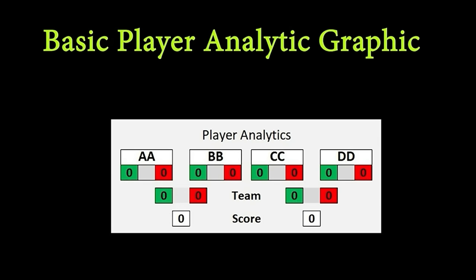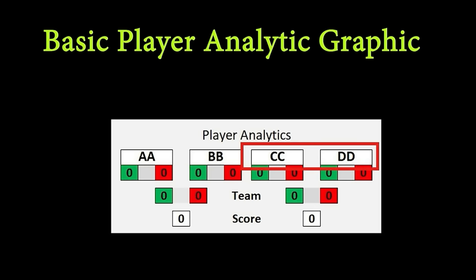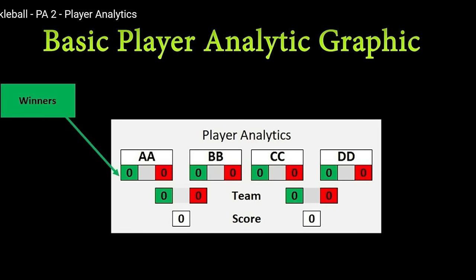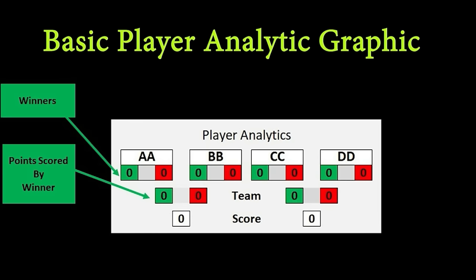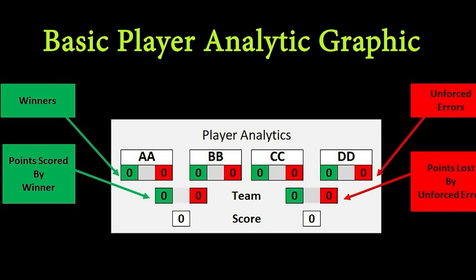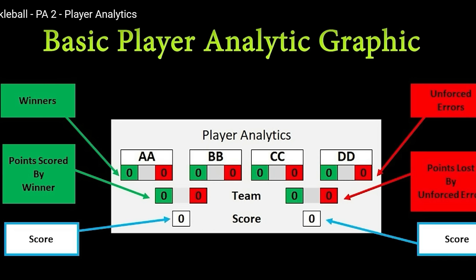Here's the analytic sheet and here's how it works. At the top you have the players: player AA, BB, CC, and DD. Player AA and BB are on one team and player CC and DD are on another team. You'll see some numbers in green — those represent winners. If player AA hits a winner, a green number goes up on his board, and if his team was serving, that means they got a point by hitting a winner. On the other hand, you have the red numbers — those are unforced errors. If the team that made the unforced error was receiving the ball, they lost a point. At the bottom, you have the score for each team. It may look a little complicated, but it really is not. There are four things that can happen.